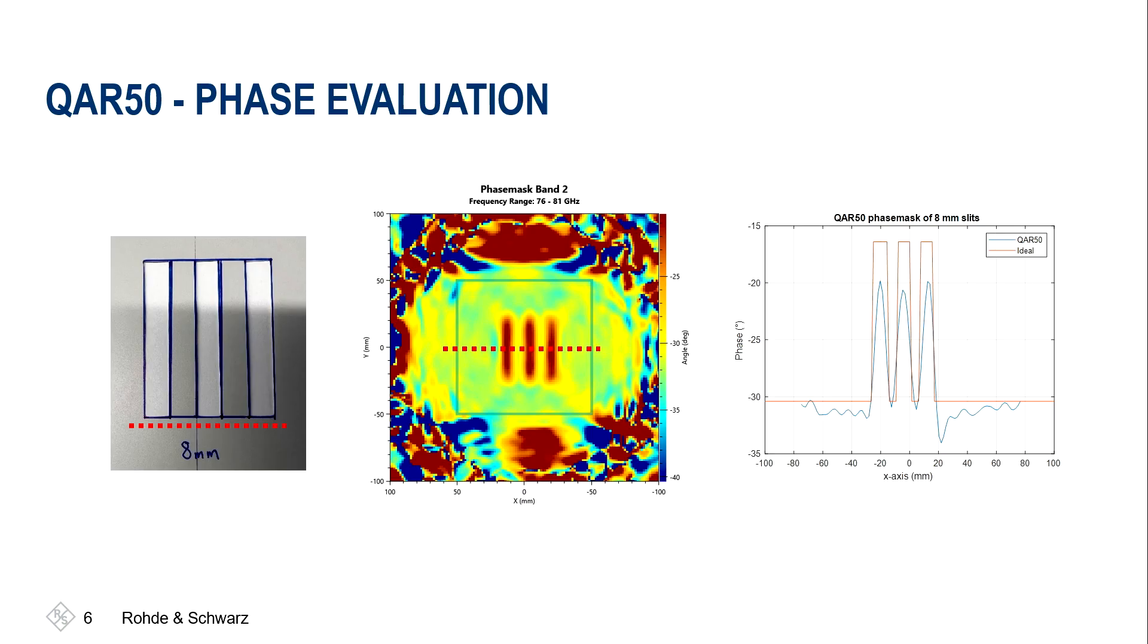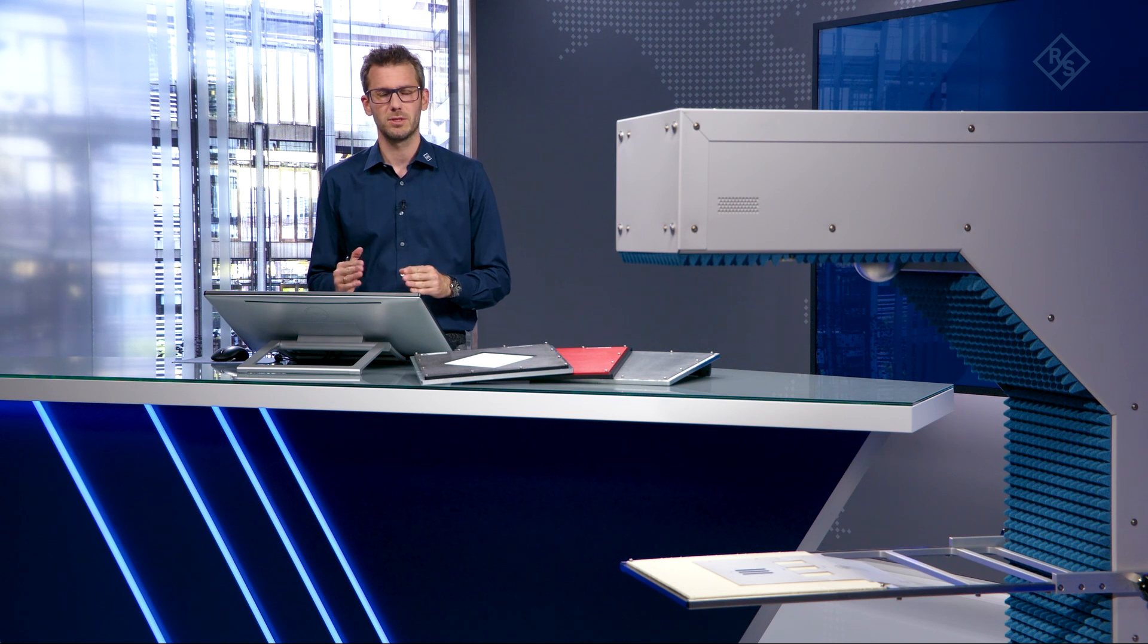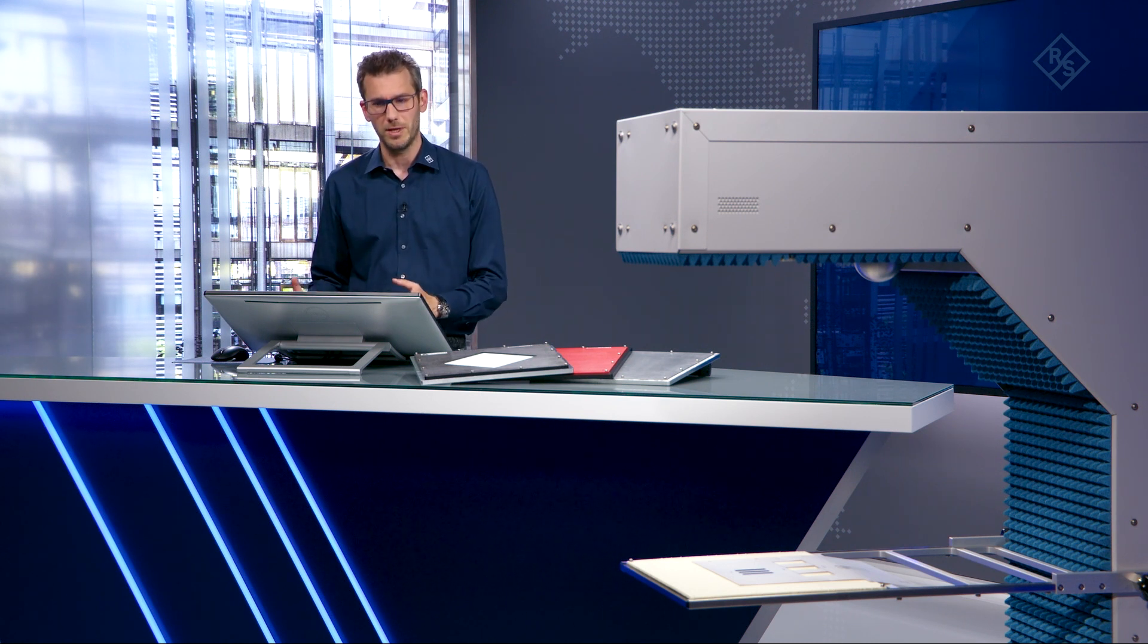If we have a look at this 8 millimeter plate, which is the one currently in the instrument, we can see in the middle of the screen that we can more or less distinguish between the three cutouts. Also on the right hand side, you see the theoretical behavior of the phase and you see what the QAR50 is actually measuring. For this 8 millimeter sample, we can clearly distinguish between these cutouts. And we think this is a worst case scenario for the QAR50. Therefore we stated that the QAR50's resolution is about or better than 8 millimeters.